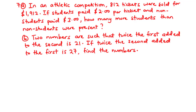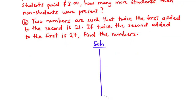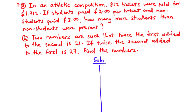Now let's solve question 7. We have two questions, 7a and 7b. Let's solve question 7a first. In an athletic competition, 812 tickets were sold for $1,902. If students paid $2 per ticket and non-students paid $3, how many more students than non-students were present?